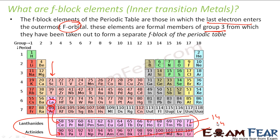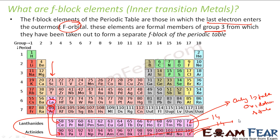There are 14 elements in lanthanides and 14 in actinides — total 28 elements in F-block, two series. Lanthanum is not technically a lanthanide but resembles their properties, so we study it with lanthanides. Similarly, actinium resembles actinides and is studied with them. All lanthanides resemble one another and have only one stable oxidation state. Actinides, on the other hand, have a wide range of oxidation states.